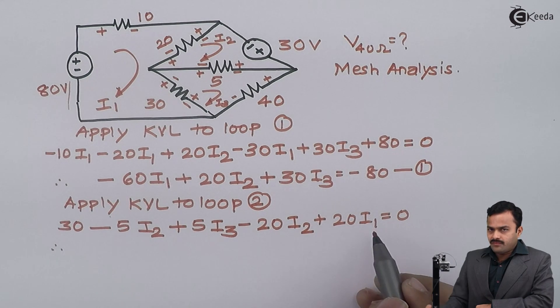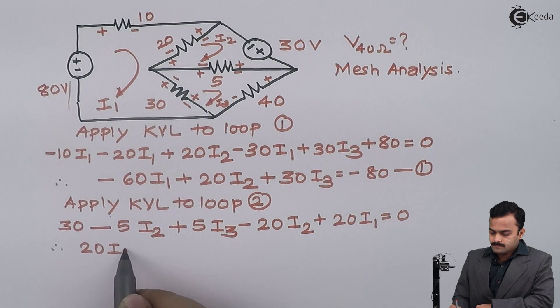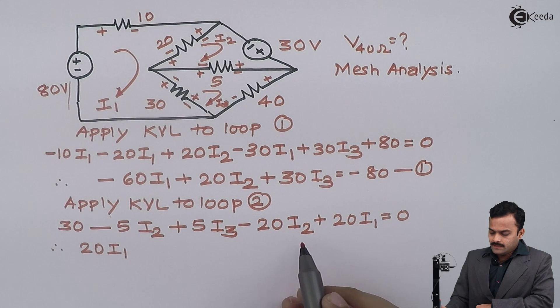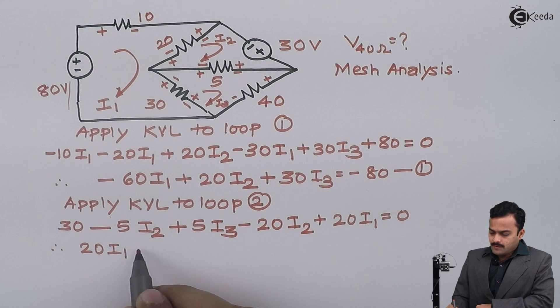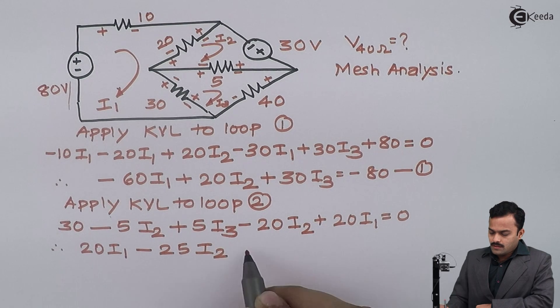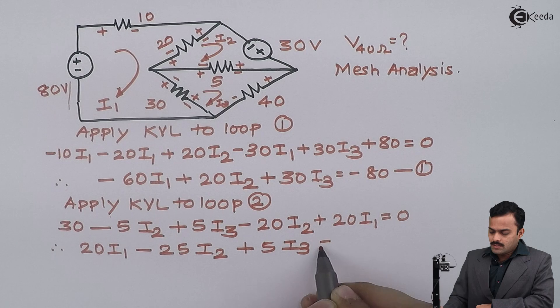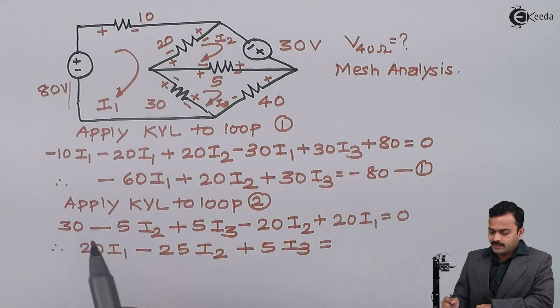After simplifying, minus 20I1 will remain as it is, then minus 5 minus 20 will become minus 25I2, and plus 5I3 will remain as it is. Constant, this plus 30 will go to that side of the equation and become minus 30. Equation number 2.